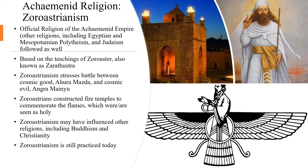Now we'll talk about the Achaemenids' religion, Zoroastrianism. Zoroastrianism was the official religion of the Achaemenid Empire. Other religions, including Egyptian and Mesopotamian polytheism and Judaism, were followed by certain conquered peoples as well, but they were allowed to observe their religion so long as they remained subservient to the empire. Zoroastrianism is based on the teachings of Zoroastra, also known as Zarathustra, pictured here.